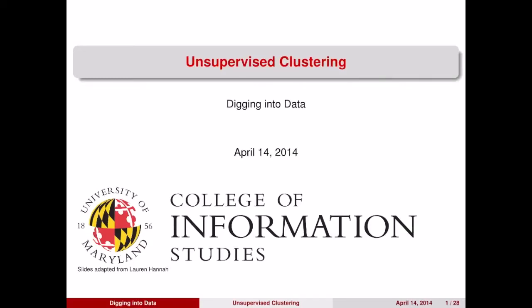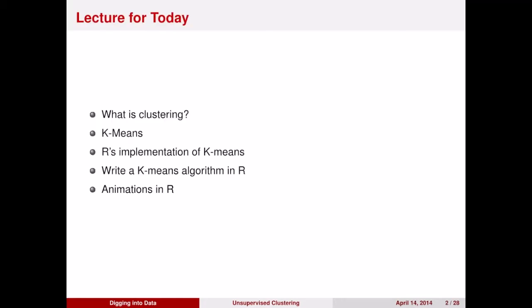Today we're shifting gears a little bit. While before we have been focused on supervised methods, today we're going to talk about unsupervised methods. We'll first lay out the difference between classification supervised methods and unsupervised clustering methods. We'll talk about a couple of examples of these methods. One example is k-means — we'll talk about that algorithm at a conceptual level and an implementation level. Afterwards, we'll talk about clustering methods that can be used for discrete data, such as text.